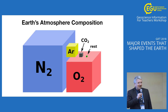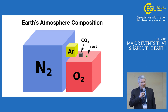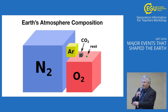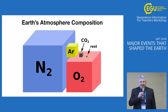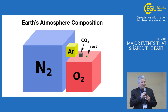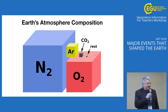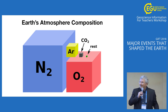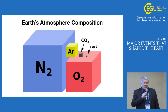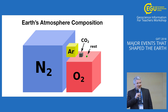Just to orient you a little bit to what we're trying to understand, this is a quick cartoon showing the relative abundances of gases in the atmosphere. Most of the Earth's atmosphere is nitrogen, but the next most abundant gas is oxygen at about 21% today. The question is how did it get to be that way, and how to understand how the atmosphere got to be as it is.